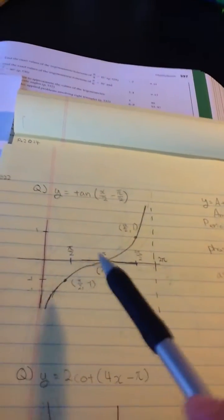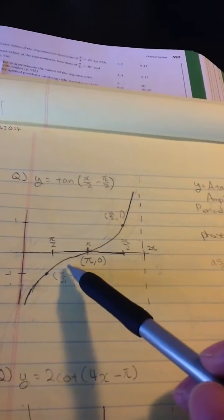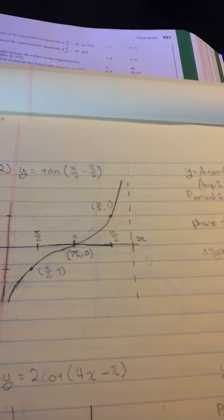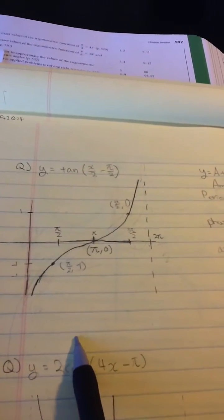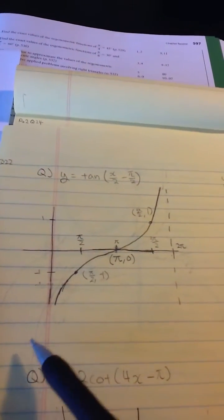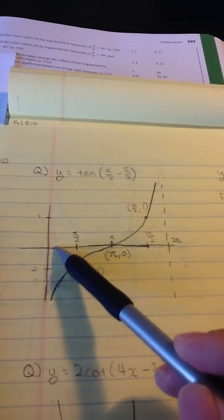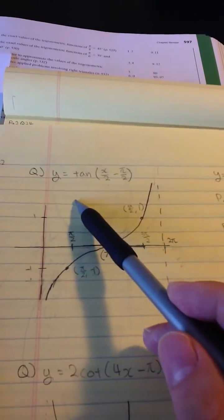I'm going to sketch the graph here, but because of the phase shift and period, the graph got kind of large and shifted to the right side here. Usually the y equals tangent x graph goes across the 0, 0 point.